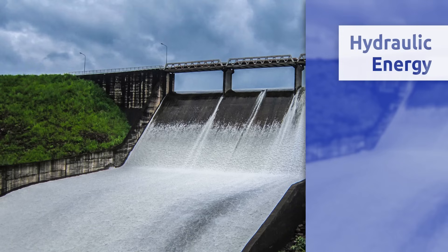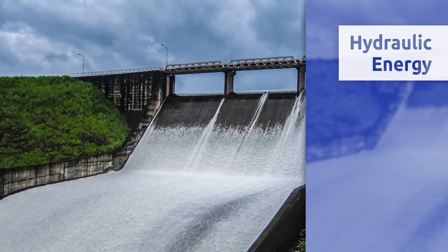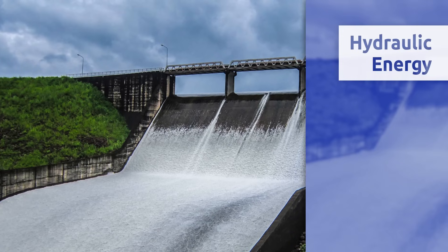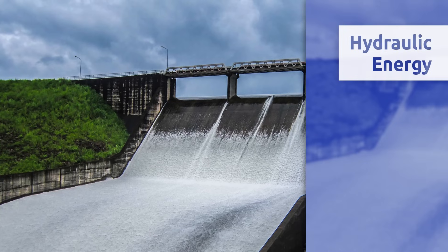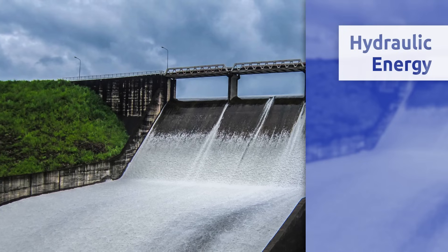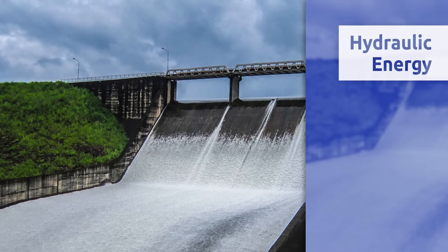Water falls over from a high spot, then it flows through the hydroelectric factory where the force of the water is transformed into electric energy.